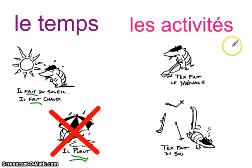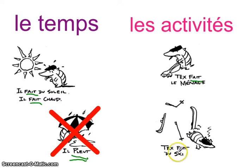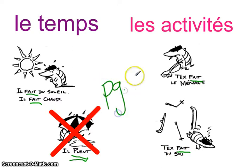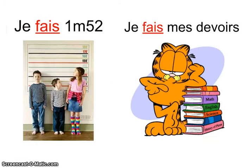Nous avons aussi le verbe faire pour les activités. Par exemple, il fait le ménage — he does the housework. Ou bien, il fait du ski. Regardez à la page 8 dans le paquet pour les autres expressions qui utilisent faire.